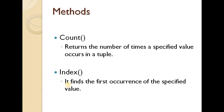Tuple methods are count and index. Count returns the number of times a specified value occurs in a tuple — for example, counting how many times 'physics' appears. Index finds the first occurrence of a specified value in the tuple, such as finding 'chemistry' or 'biochemistry'.